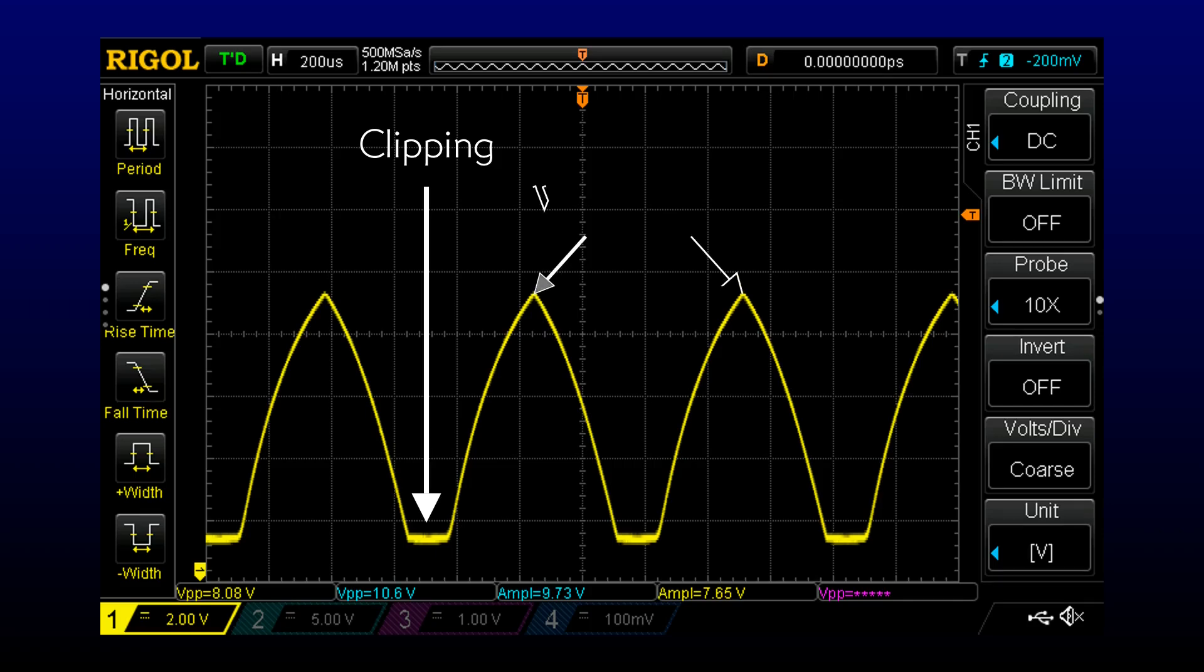But at the negative peaks of the input signal, that is the positive peaks of the output, things get strange. The peaks get distorted into this gothic arch shape. We set off on the side project so that we can understand what's happening.